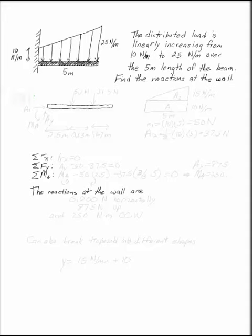The distributed load is linearly increasing from 10 N per meter to 25 N per meter over the 5 meter length of the beam. I want to find out what the reactions are at the wall.